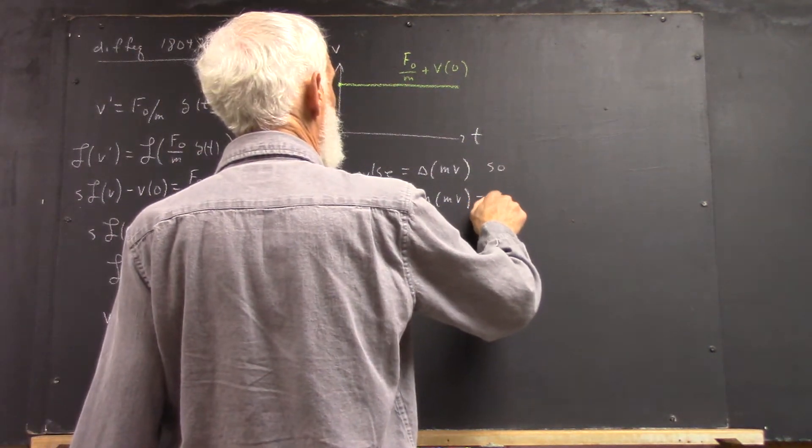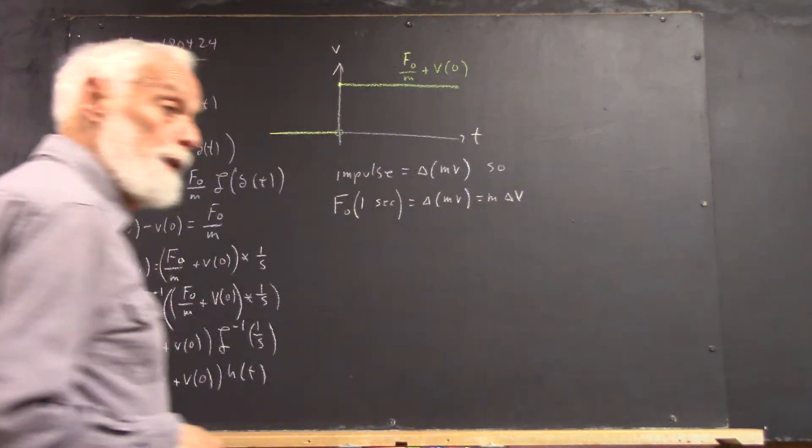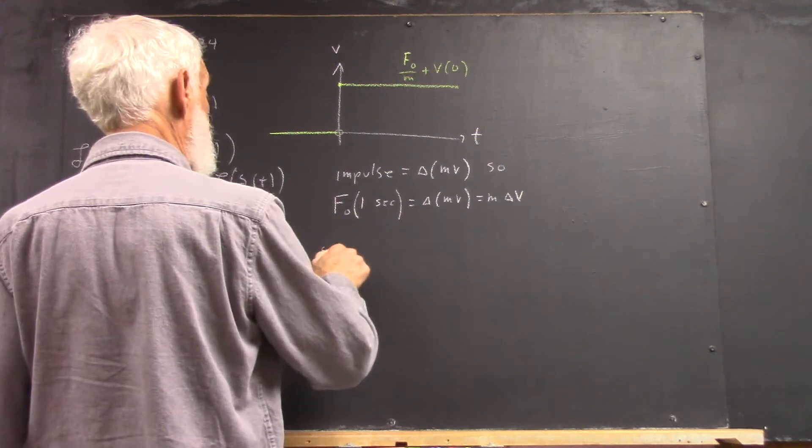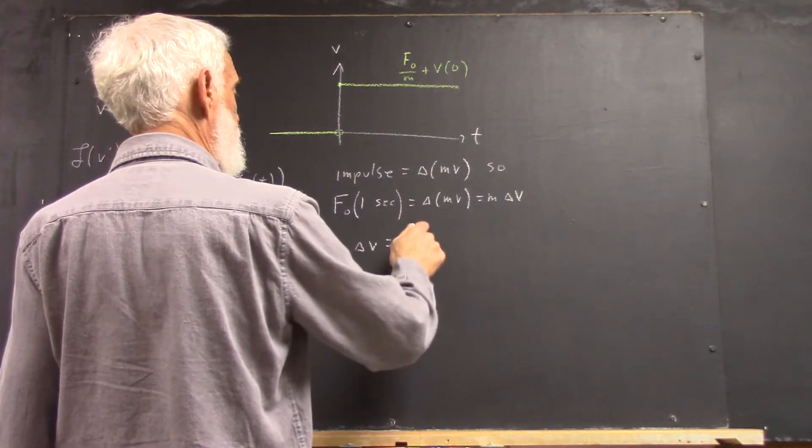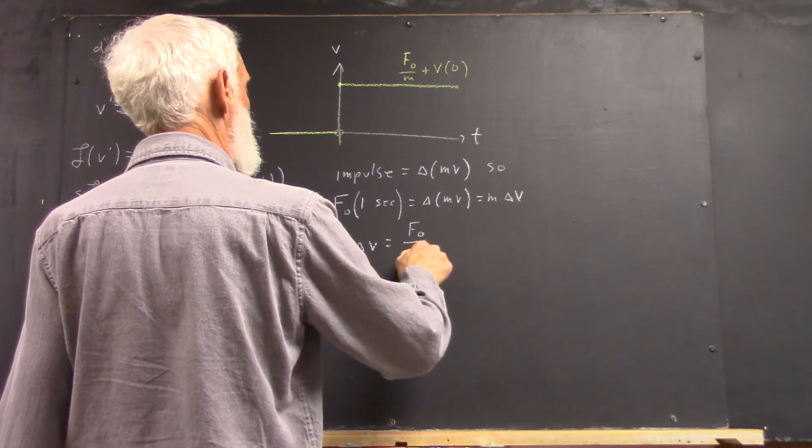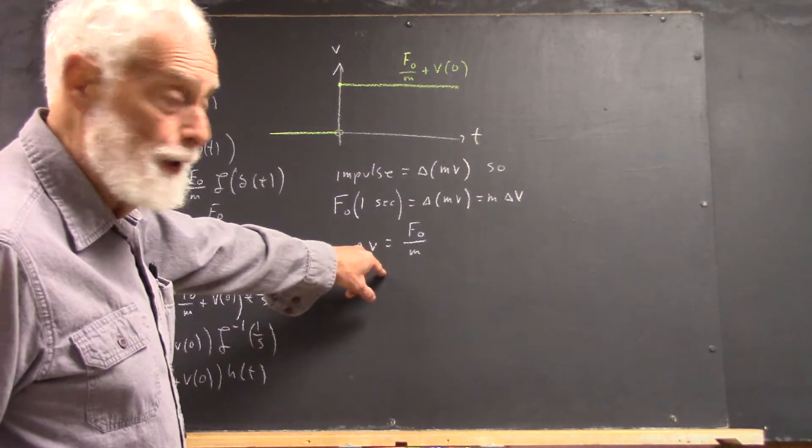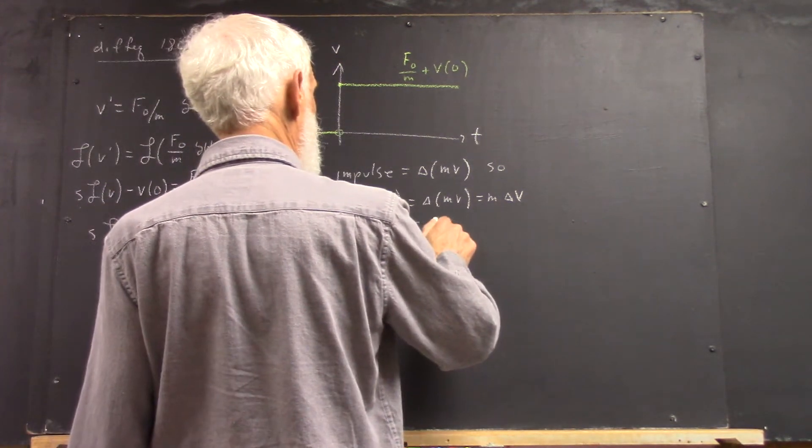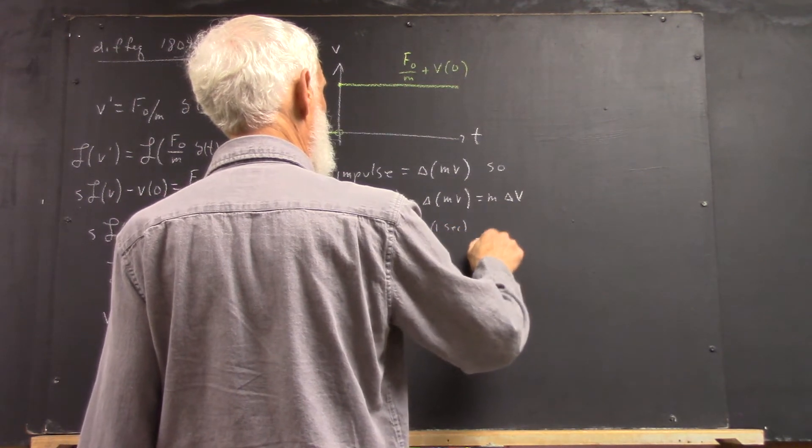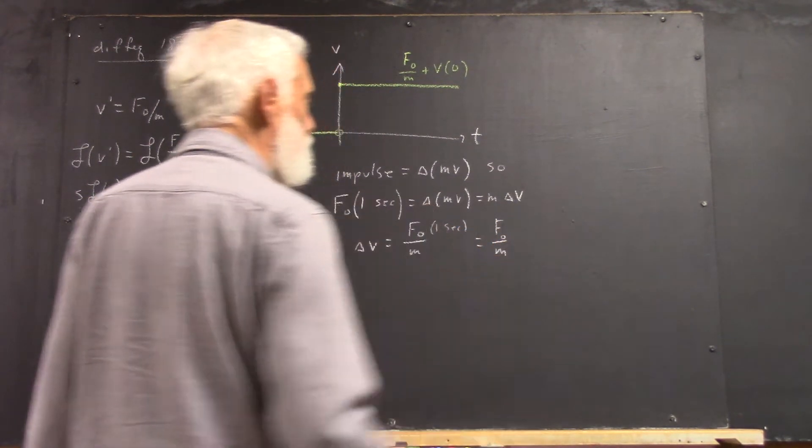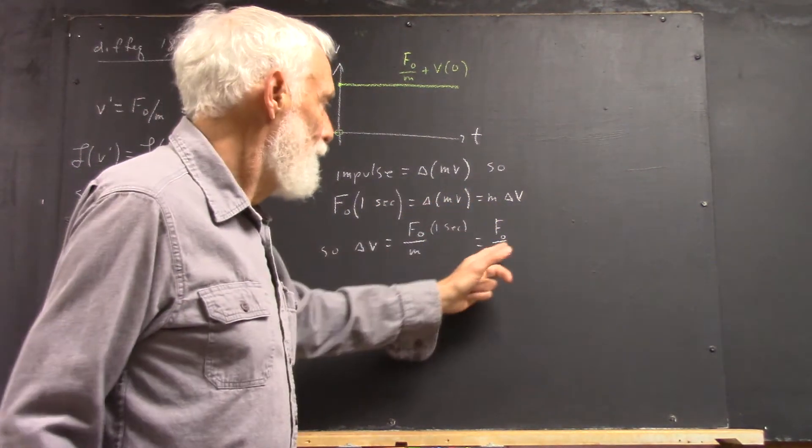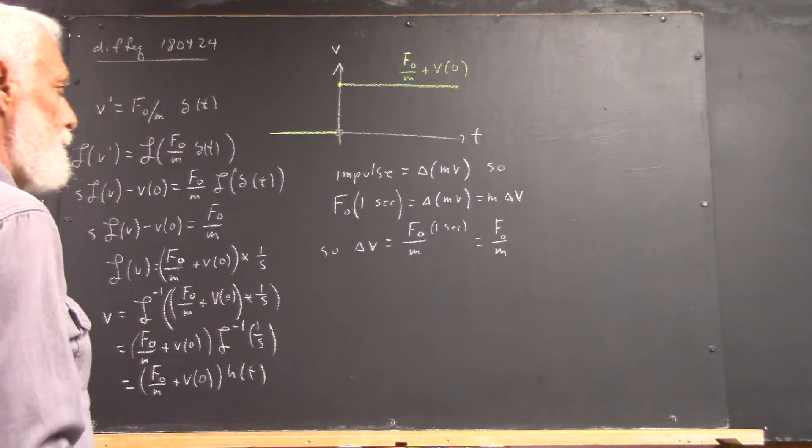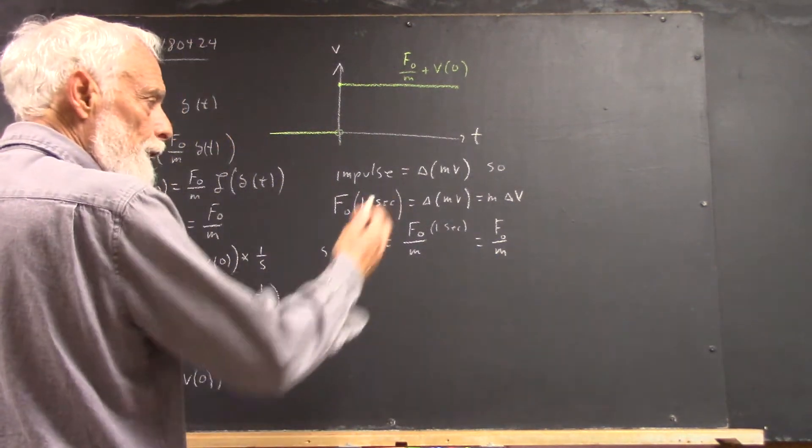And of course, that equals m delta v, right? Delta v is f naught over m, but that's times 1 second. And that equals f naught over m if we just understand that we have this times the time unit of 1 second. So delta v is f naught over m.